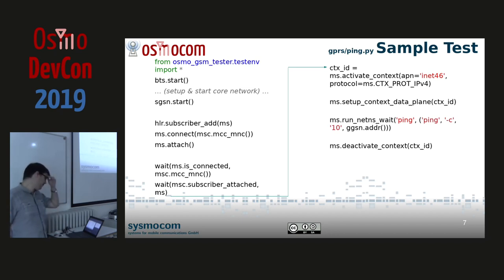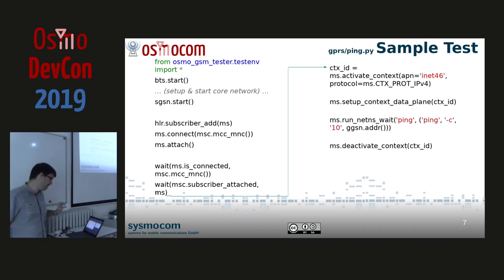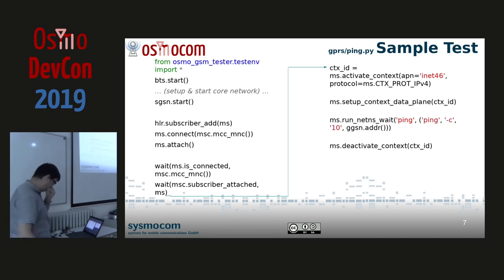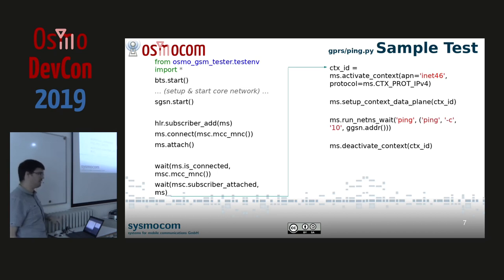In the test we wait for the MS to be connected to the MSC and attached to GPRS. Once we're there, we want to activate a PDP context — we tell the MS which APN to connect to and the protocol we want, IPv4 or IPv6. Next is setupContextDataPlane, which handles all the network namespace movements and setups. Then we simply run a ping command — in this case pinging the GGSN address. If it fails, the test fails. Finally, we deactivate the context.